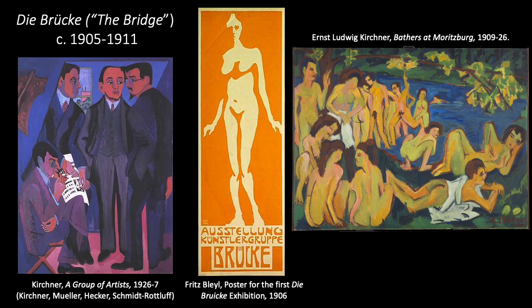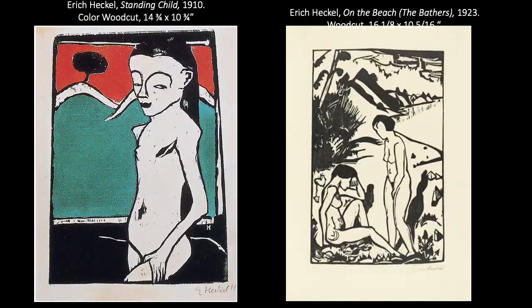Some of their favorite motifs included the natural world and the nude human figure, underscoring their support for the growing desire in Germany to reconnect with nature. Many citizens left cities in favor of more remote areas during this time, and nudism was also a growing cultural trend in Germany. Members of Die Brücke spent summers at lakes near Dresden enjoying an idyllic, creative, free-loving, communal existence. For their first exhibition in 1906, founding member Fritz Bleyl designed an expressionistic woodcut poster featuring a partially abstracted nude woman, reflecting the group's attitudes towards open sexuality and the natural state of nudity.